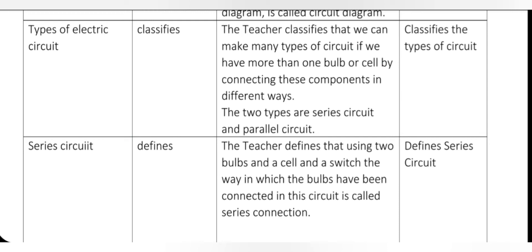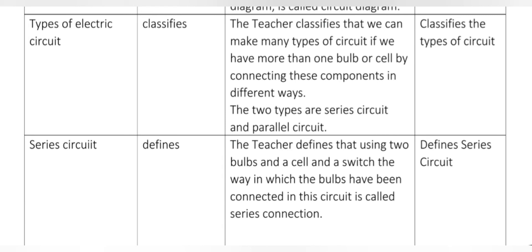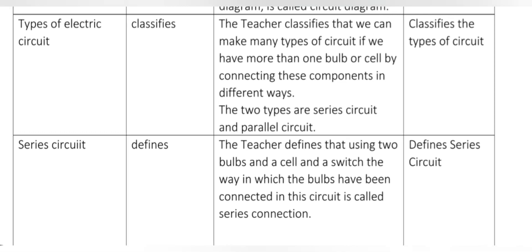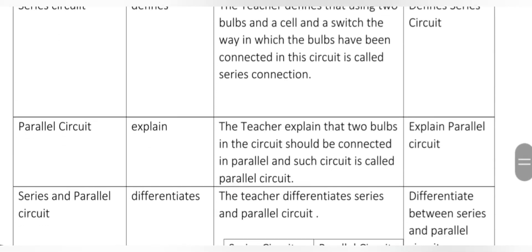Types of electric circuit: the teacher classifies that we can make many types of circuits if we have more than one bulb or cell, by connecting these components in different ways. The teacher defines that using two bulbs, a cell, and a switch, the way in which the bulbs have been connected is called series connection. We define it as the series circuit, and in evaluation, students define the series circuit.